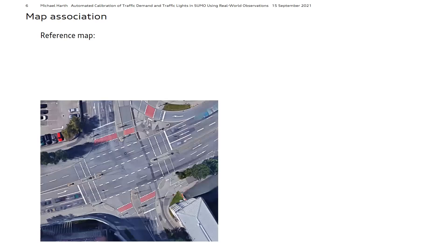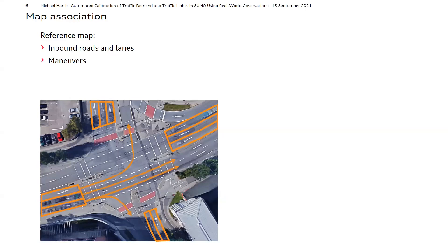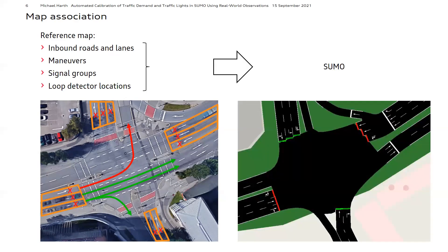For matching the traffic light states and traffic counts, the allocation is based on a second ground truth map — a reference topology provided by the traffic light providers in Ingolstadt, GEFAS and TTS. This reference map represents all inbound roads and lanes for each traffic light actuated intersection, including the associated stopping lines, possible maneuvers, signal groups implying traffic light states on inbound lanes, and geographical positions of all loop detectors. All this information must be allocated in Sumo.